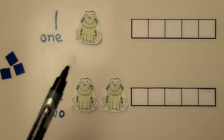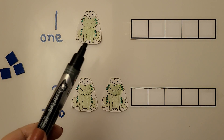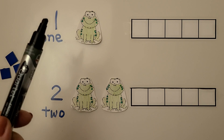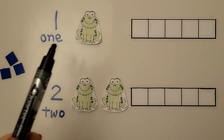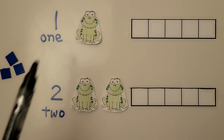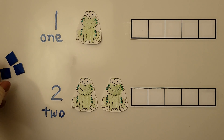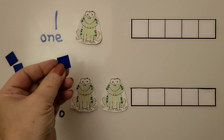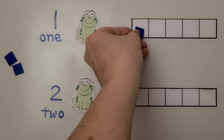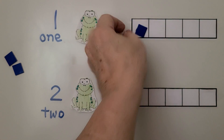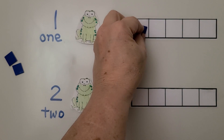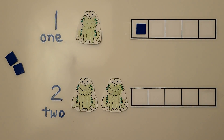Here we have one frog. Here's the number 1. Here's the word 1. We can put a counter into the 5-frame to represent the frog. We take one counter and put it into the 5-frame. One counter for one frog.